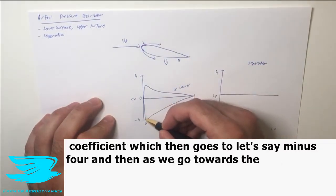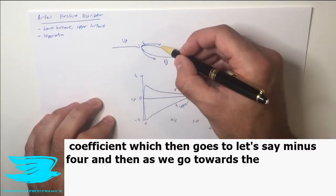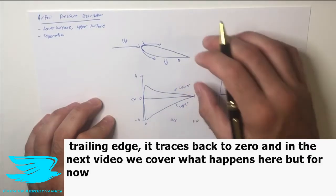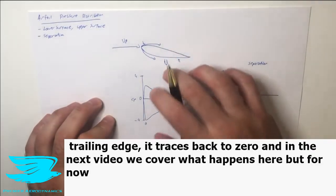So we actually get a drop in the pressure coefficient which then goes to let's say here minus 4. Then as we go towards the trailing edge it traces back to zero. In the next video we'll cover what happens here, but for now let's move on.